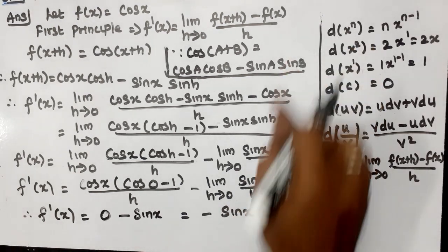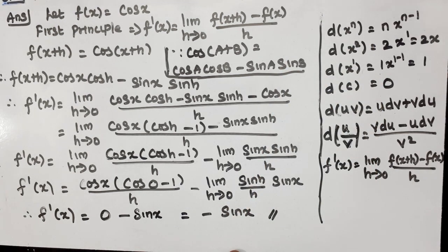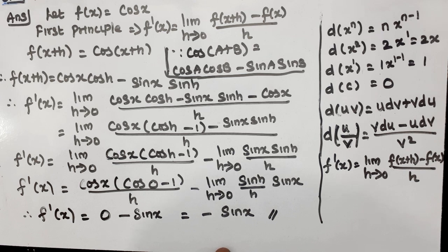So the first term becomes 0, and the second term gives − sin x · 1 = − sin x. Therefore, the derivative of cos x using the first principle is −sin x. Next is question number 11 in the next video.